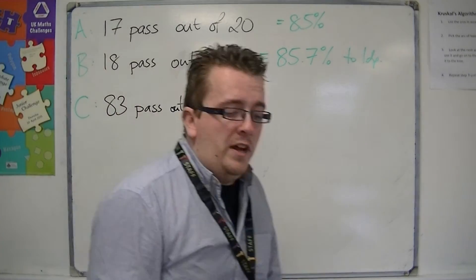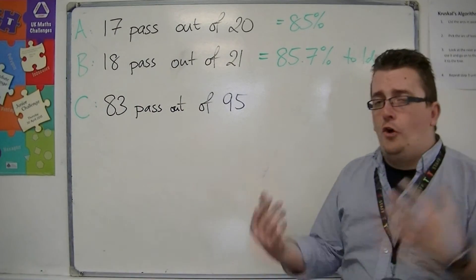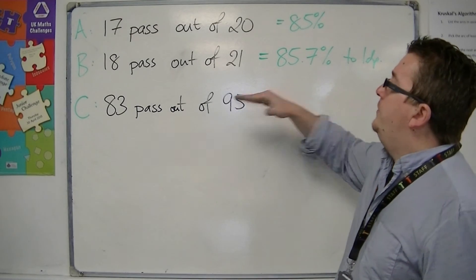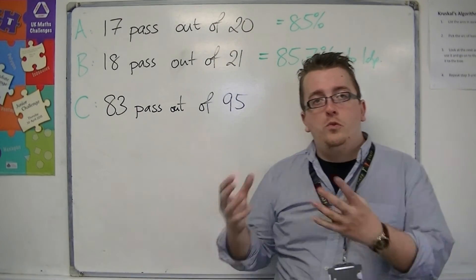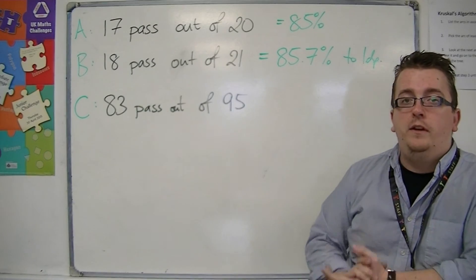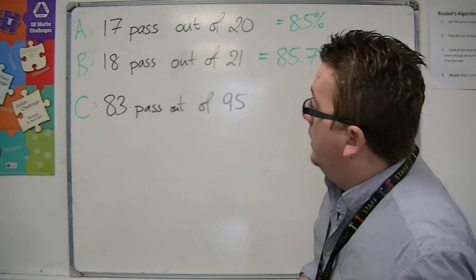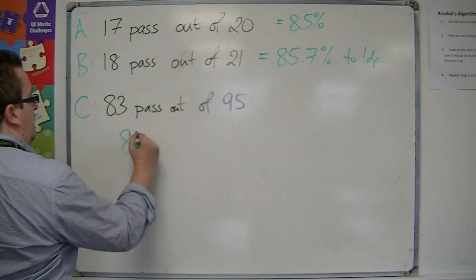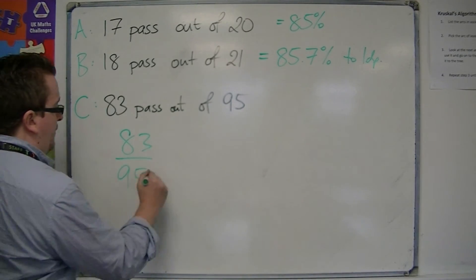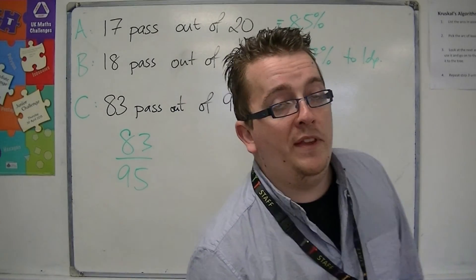And let's say it got 83 passes out of a possible 95. And we wanted to know if the online class had done better than either of the two normal sized classes, teacher-led classes. So we're going to do 83 over 95 as a fraction. We want to turn that into a percentage.